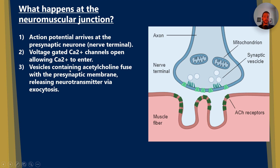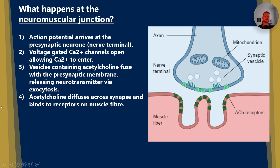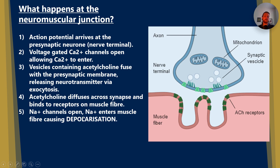Vesicles containing acetylcholine will fuse with the presynaptic membrane — that's before the synapse — releasing neurotransmitter via exocytosis. For more information on this process, make sure you watch my synapses video. Acetylcholine diffuses across the synapse and binds to receptors on the muscle fibre — the ACh receptors, which are acetylcholine receptors. Sodium ion channels are going to open, and sodium ions will enter the muscle fibre, causing depolarisation, where the charge goes from minus 70 to plus 30 or 40 millivolts.